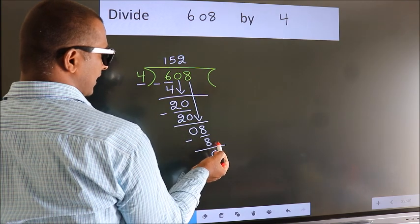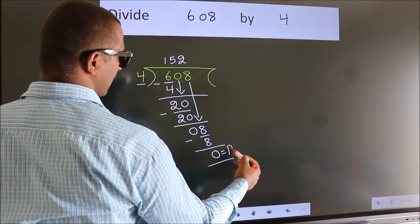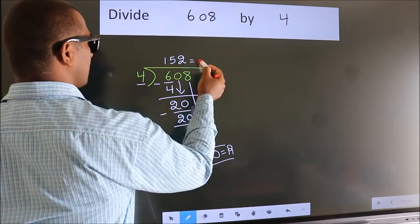No more numbers to bring down. So, we stop here. This is our remainder. This is our quotient.